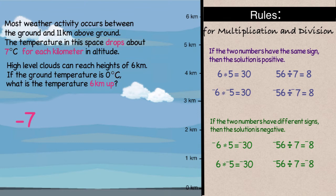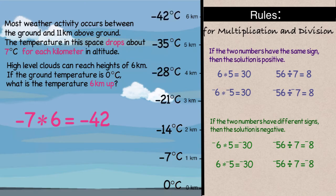or negative 42. So if the temperature is zero on the ground, the temperature at the tallest clouds, 6 kilometers up, would be negative 42 degrees Celsius.